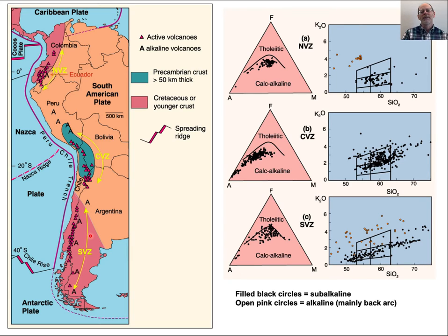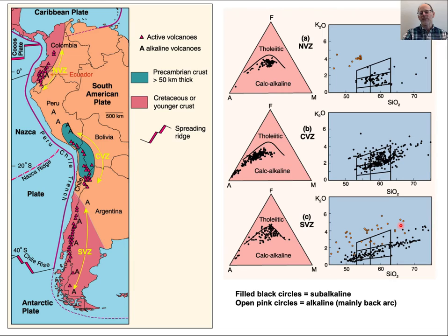Here are examples of different compositional trends on an AFM diagram for the Andes — the northern, central, and southern volcanic zones. The magmas tend to go straight off in a direction towards increasing alkali content and decreasing iron and magnesium content. You don't see an initial iron-magnesium enrichment trend. The rock types range from basalts and basaltic andesites through andesites, all the way up into rhyolites.